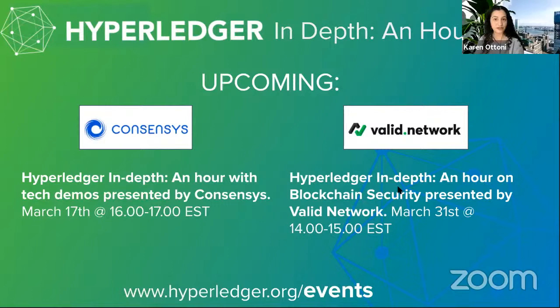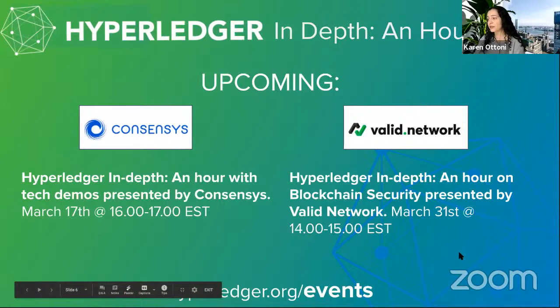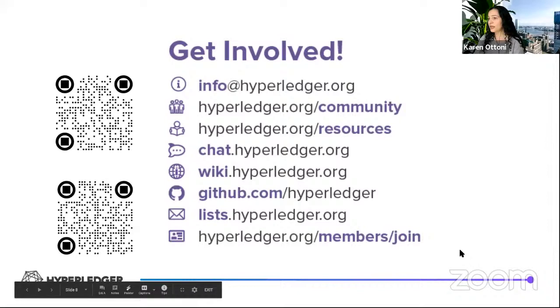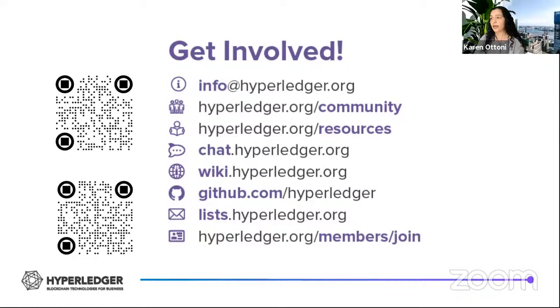We do have a regular series of these. Our next one is with Consensus on March 17th, and then Valid Network is presenting on March 31st — similar format, very engaging, here for you to learn and ask questions. There are also many ways to get involved in Hyperledger: the community page, resources on our website, various projects, SIGs, working groups, our wiki, and mailing list.